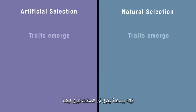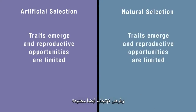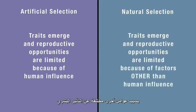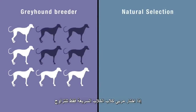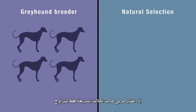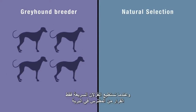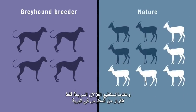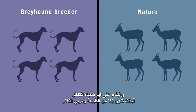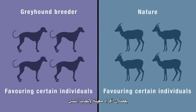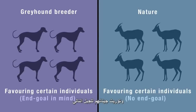Natural selection simply says that traits emerge and reproductive opportunities are limited because of factors other than human influence. If a greyhound breeder selects only the fastest dogs for breeding stock, and in the wild only the fastest gazelles outrun their predators and survive to reproduce, then both nature and the greyhound breeder are favouring certain individuals for reproducing offspring and passing on their genetic information to the next generation.